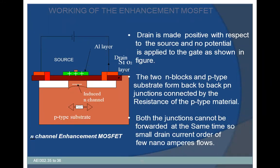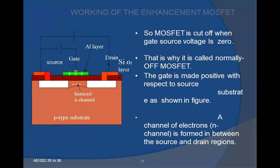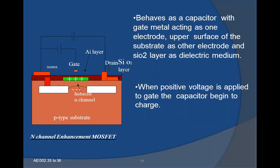When drain is made positive with respect to the source and no potential is applied to the gate, the two N-blocks and P-type substrate form back-to-back PN junctions connected by the resistance of the P-type material. Both junctions cannot be forward biased at the same time, so a small drain current on the order of a few nanoamperes will flow. MOSFET is cut off when gate-source voltage is zero, which is why it is called a normally-off MOSFET. When the gate is made positive with respect to the source substrate, a channel of electrons is formed between the source and drain region, and it behaves as a capacitor with the gate metal acting as one electrode, the upper surface of the substrate as the other electrode, and silicon dioxide as the dielectric medium.